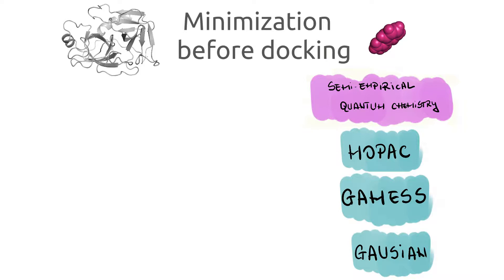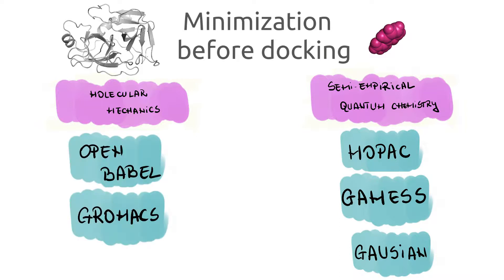Proteins, on the other hand, are often used from the PDB database and are usually in a good optimal structure. However, it is good practice to perform some molecular mechanics energy minimization such as steepest descent or conjugate gradient, and these algorithms are implemented in some of the open source programs such as OpenBabel or GROMACS.